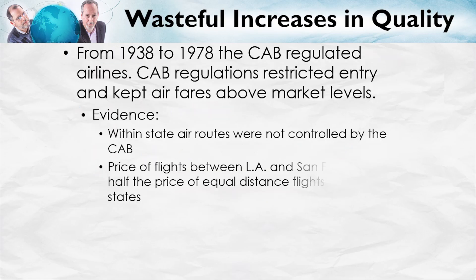From 1938 to 1978, the Civil Aeronautics Board regulated airlines. CAB regulations restricted entry — they prevented new competitors from entering the industry — and they kept airfares well above market levels. There's some interesting evidence on how high the CAB kept fares above market rates. Within-state air routes were not controlled by the CAB; they were unregulated by the CAB.